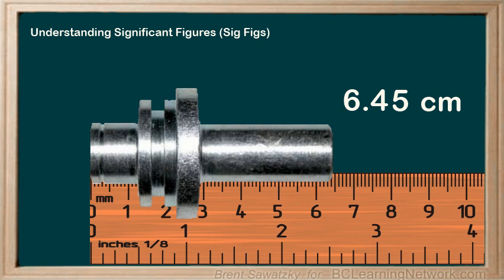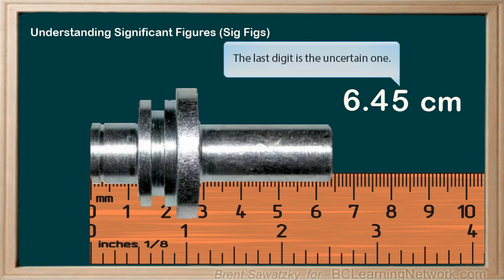Could you argue that it should have been six point four four or maybe six point four six? Indeed you could. The five is an uncertain digit — a decent approximation but not certain.